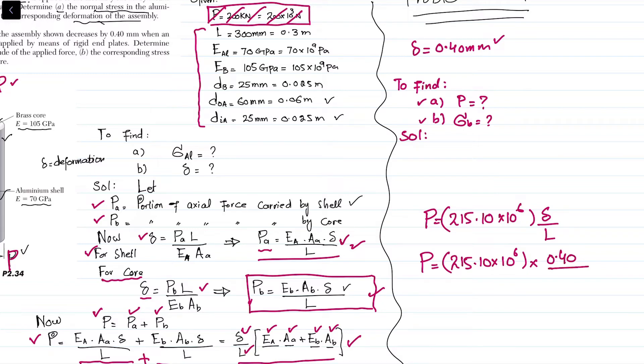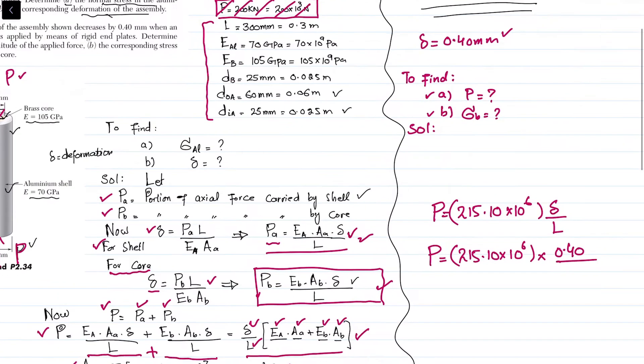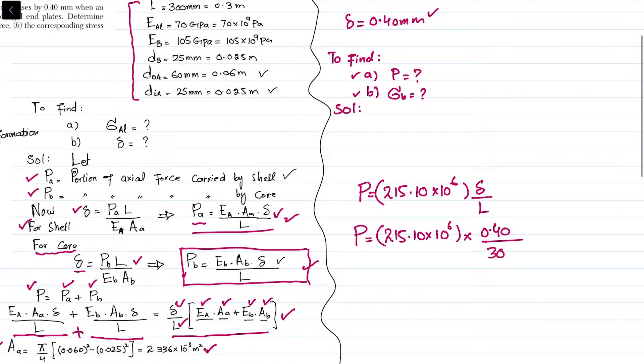0.40 divided by the original length of 300 millimeters gives P equals 286.8 times 10^3 newtons, or P equals 287 kilonewtons. This completes part A.